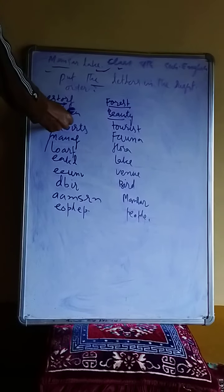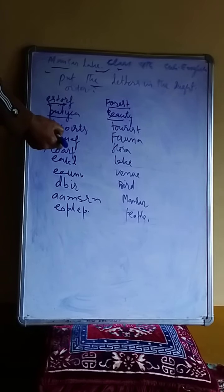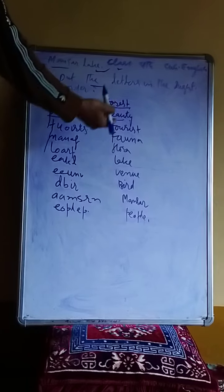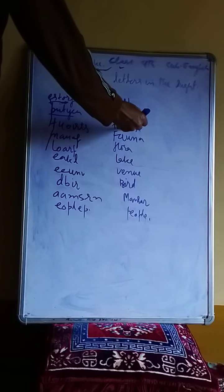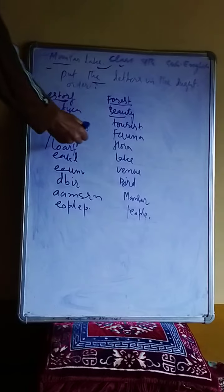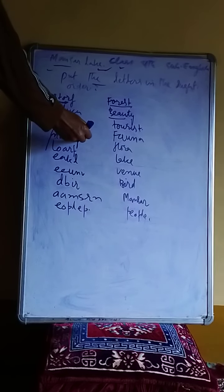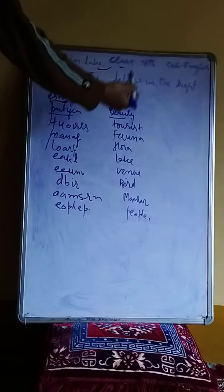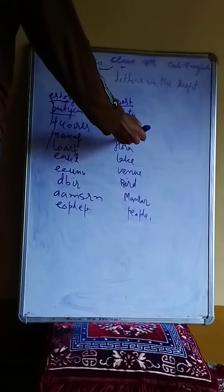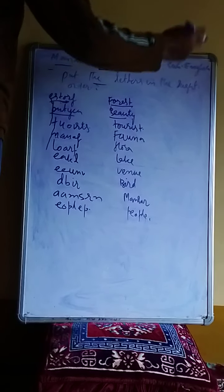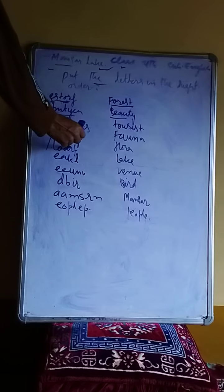Next, T-U-O-I-R-T-S — we arrange this in the right order: T-O-U-R-I-S-T, giving us the word TOURIST. Similarly, N-A-U-A-F arranged in the right order gives us F-A-U-N-A, the meaningful word FAUNA.